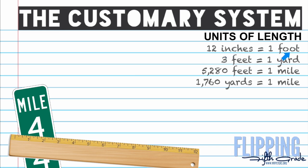So 12 inches is equivalent to one foot, three feet is one yard, 5,280 feet equals one mile, and 1,760 yards equals one mile. To summarize: a foot is bigger than an inch, a yard is bigger than a foot, and a mile is bigger than both feet and yards.